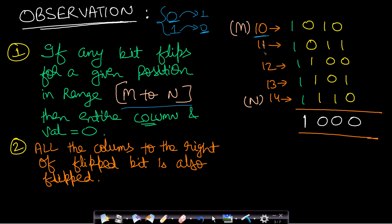For example, with m=10 and n=14, the least significant bit starts as zero and gets flipped to one, so that column is zero. The second bit starts as one but gets flipped to zero, so that column is also zero. However, the most significant bit never flips — it stays one throughout — so we copy that bit as one into the answer.